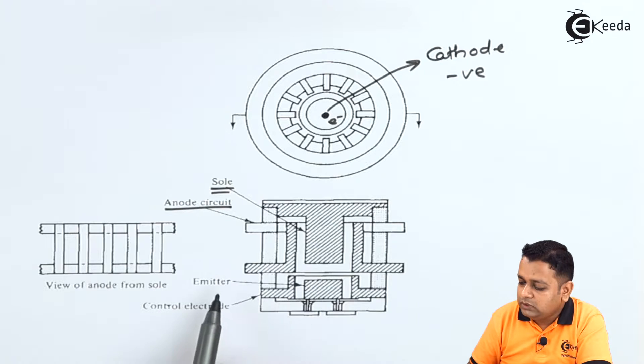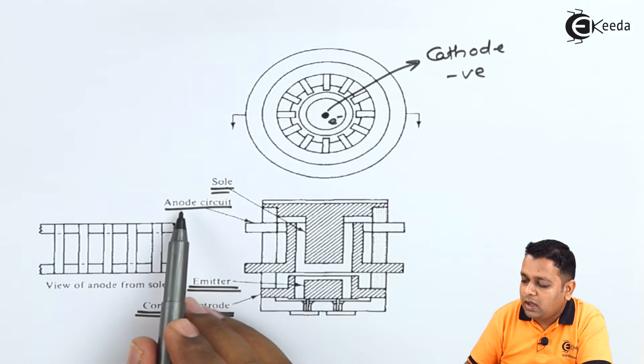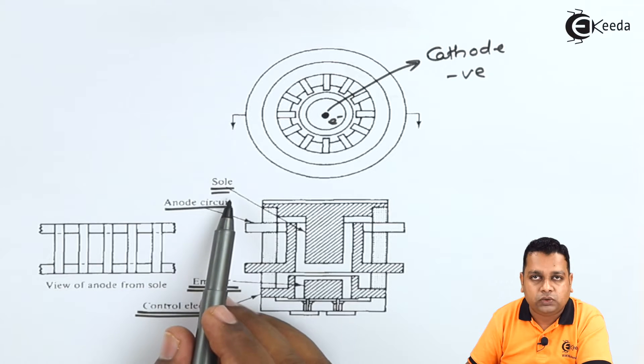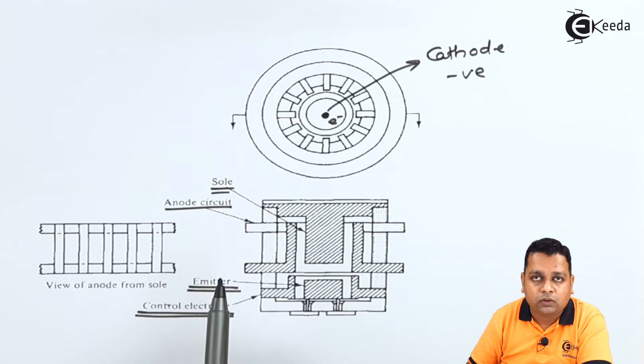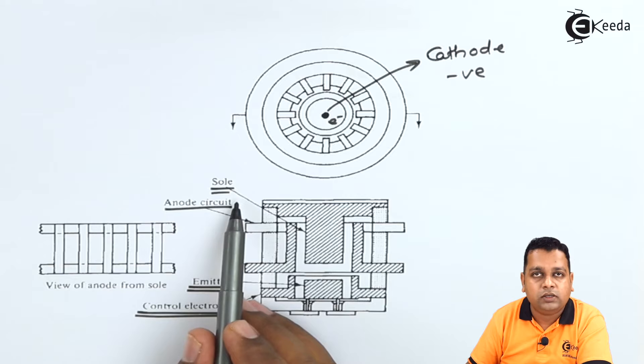Afterwards if you see here so emitter is here for the cathode, these are the controlling electrodes for the same. So here we have a gap spacing between the anode and that of the sole. So that particular electrons that have been generated by cathode are entering the space between the anode and the sole.